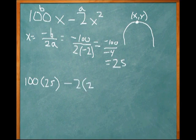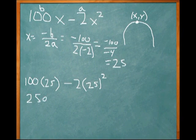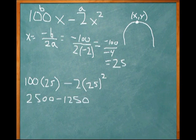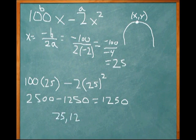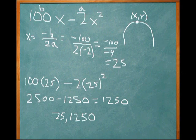So it's 100 times 25 minus 2 times 25 squared. 100 times 25 is 2500. 2 times 25 squared ends up being 1250. So 2500 minus 1250 gives us 1250.